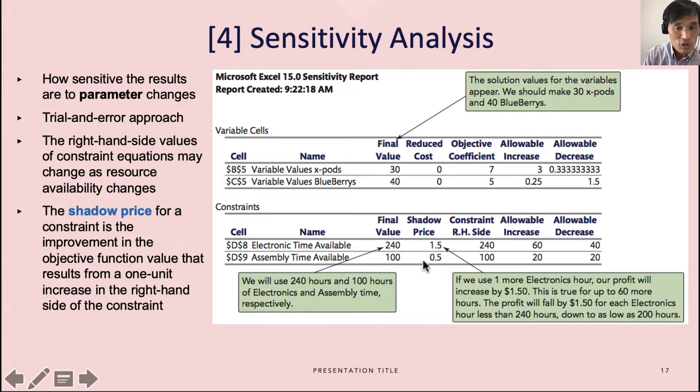You will see here shadow price. So 240 means we will use 240 hours and 100 hours for assembly time to optimize our solution. However, shadow price says if we use one more electronic hour from 240 to 241, that will increase our profit by $1.50. That's what shadow price means.